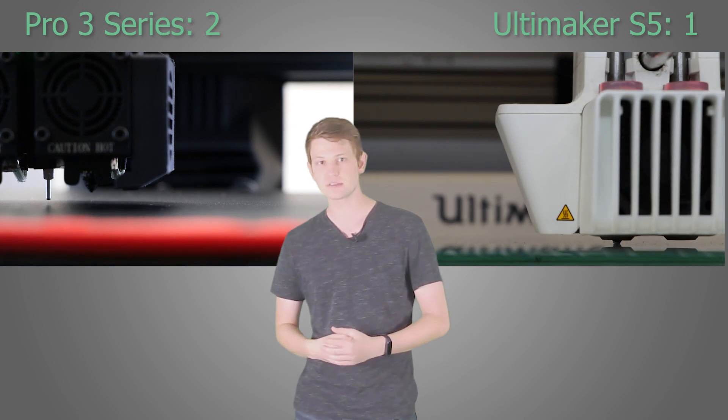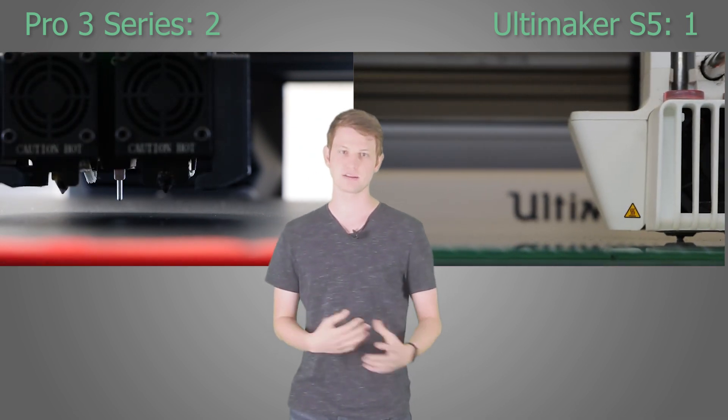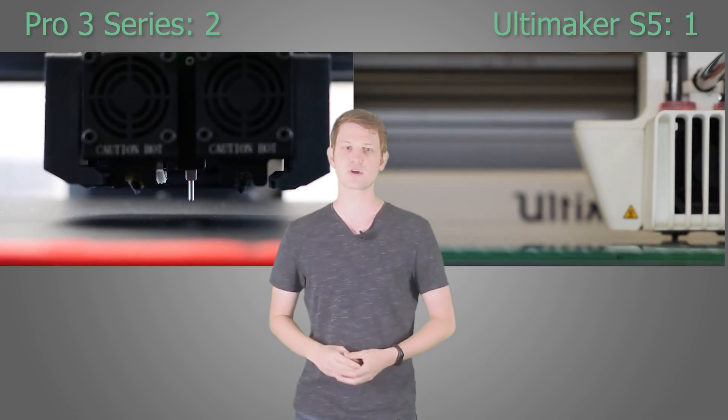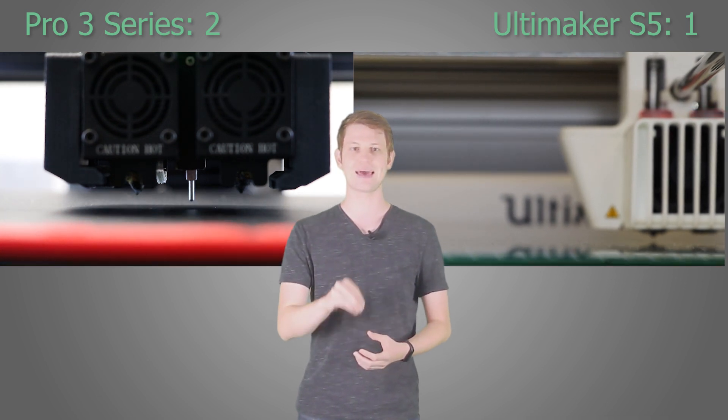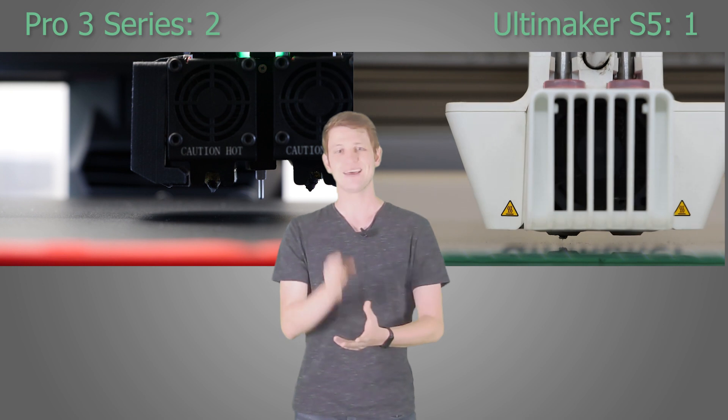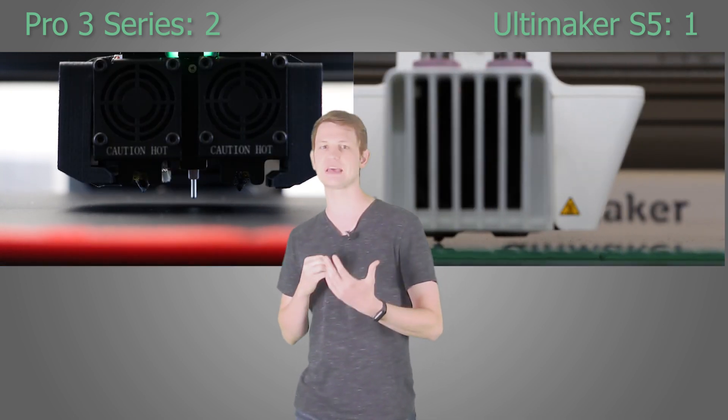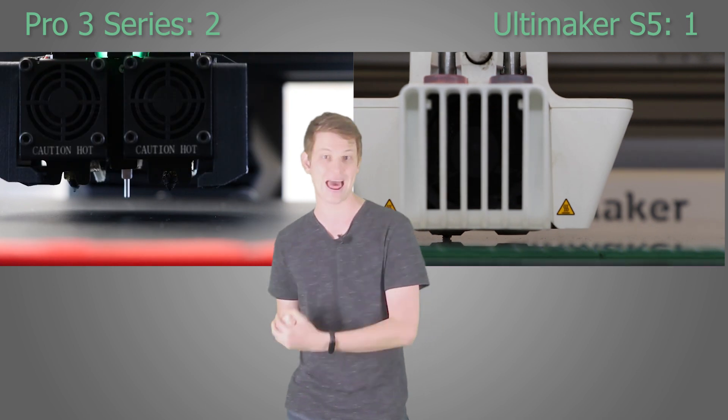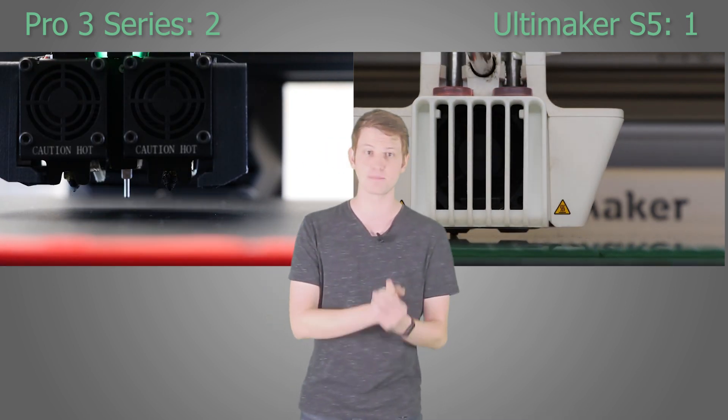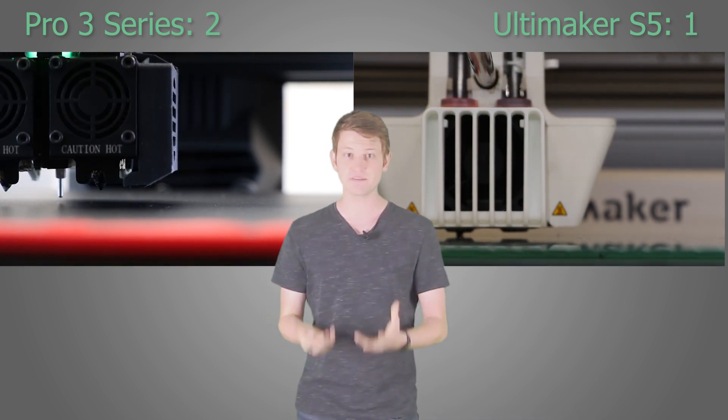All three printers have something akin to automated bed leveling. In the case of the Pro 3 series, they call it mesh leveling with flatness detection. Before each print, the machine measures the build plate and then compensates for any measured offsets during printing. There's a slight edge here I guess for the Pro 3 series, as it only measures the area necessary for the print job at hand, rather than the entire build plate every time, which saves some time. However, we'll still call this one a tie.